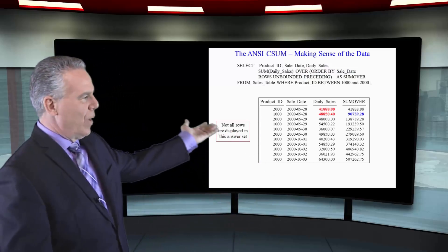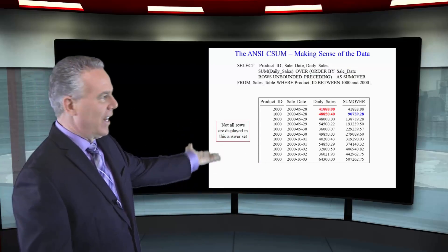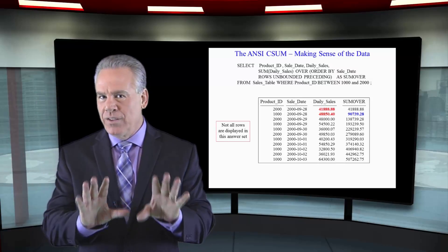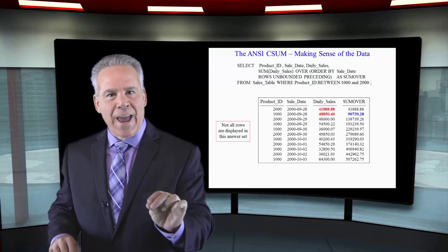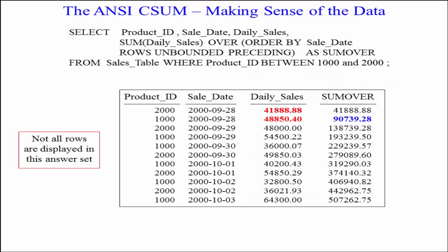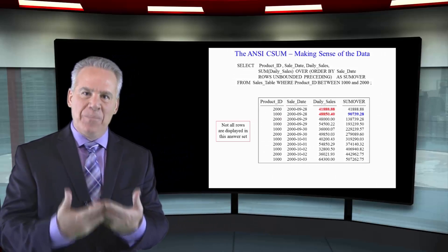Take a look at the red and the blue highlighted in the answer set. We're going to first sort by sale date. Then we do our SUM OVER of daily sales — we made 41,888. That's what the first row is going to be in the cumulative sum. Then we made 48,000, a little bit more. And then it's going to be 90,000 as a cumulative sum. It will continue to add the previous row until it gets to the end — that's what a cumulative sum is.